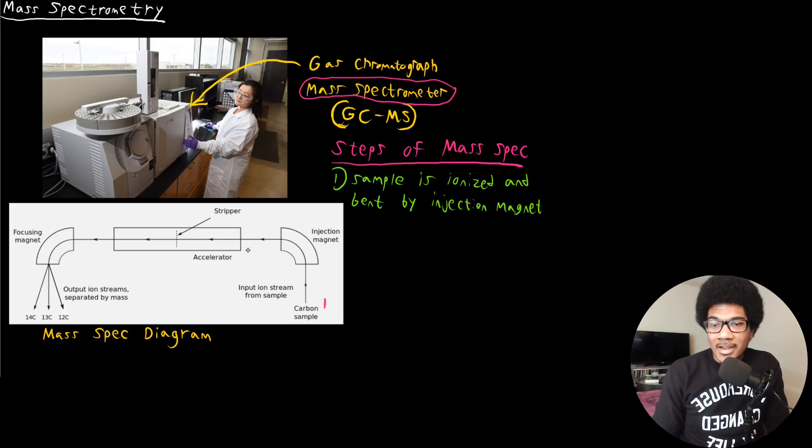So the injection magnet bends the ions, the ionized sample into an accelerator. At which point the accelerator does what it says it does. It accelerates the ions through this path. So your ions are accelerated. So the second step is the ions are accelerated.